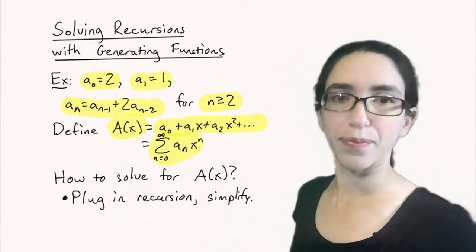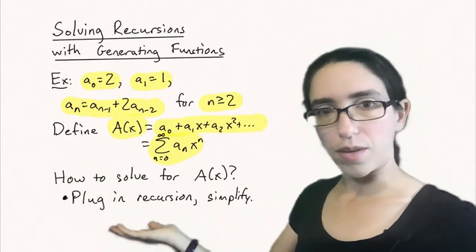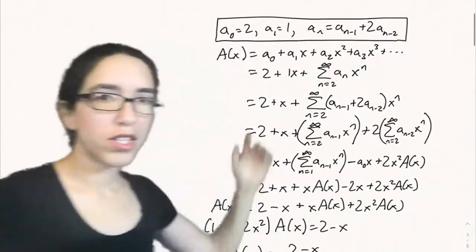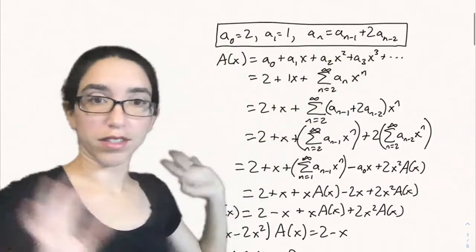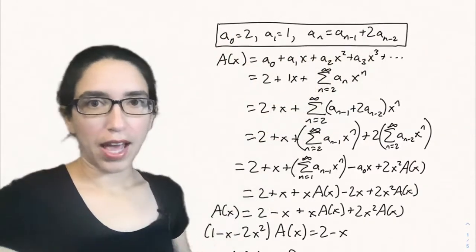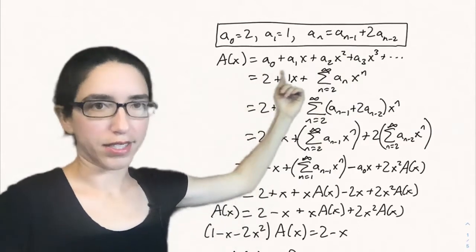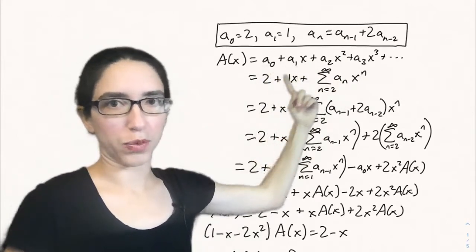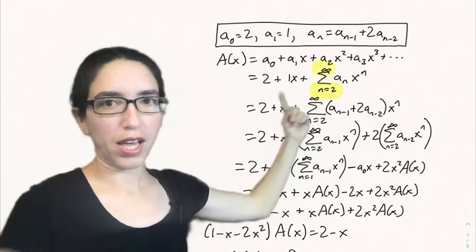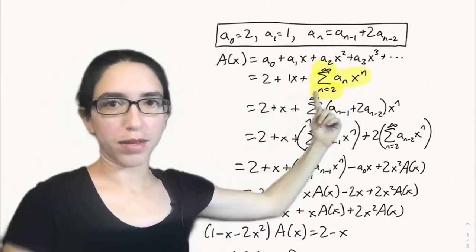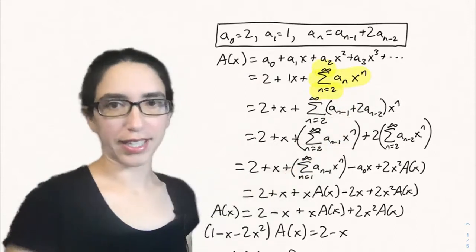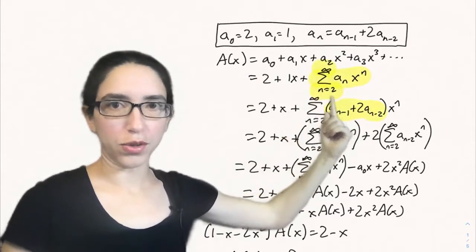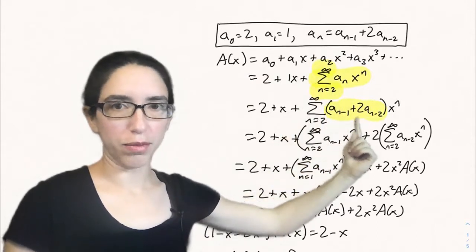Let's see if we can simplify using the recursive definition. We'll keep the recursive definition visible to help us, and manipulate the generating function a(x). Writing out the terms: we already know a0 is 2 and a1 is 1, so I can write those two down. The rest goes into a summation — the sum as n goes from 2 to infinity of a_n times x to the n. Now, plugging in the recursion for a_n (valid for all n at least 2), this becomes a_{n-1} plus 2a_{n-2}.